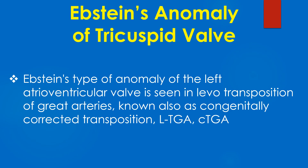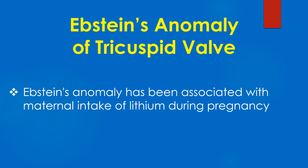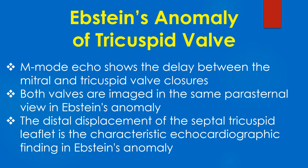Ebstein's-type anomaly of the left atrioventricular valve is seen in levo-transposition of the great arteries, known also as congenitally corrected transposition — LTGA and CTGA. Ebstein's anomaly has been associated with maternal intake of lithium during pregnancy. M-mode echo in Ebstein's anomaly shows the delay between mitral and tricuspid valve closures, and both valves are imaged in the same parasternal view.